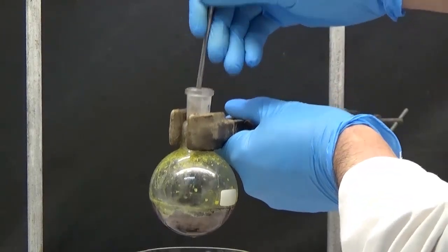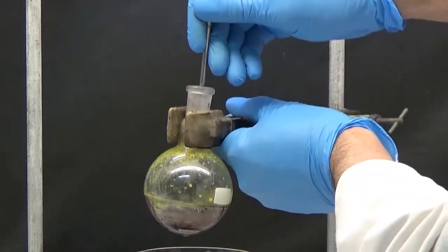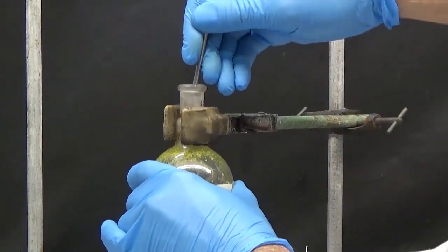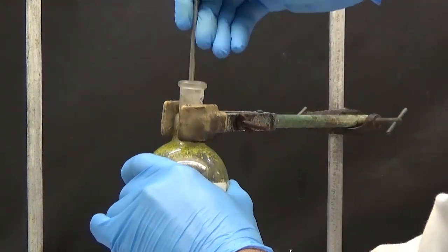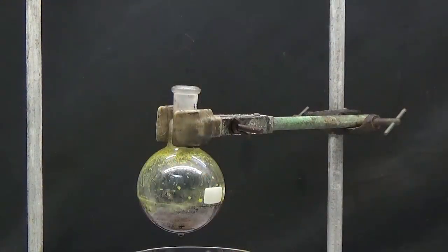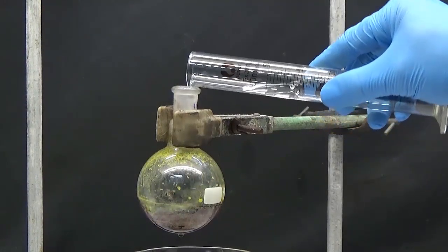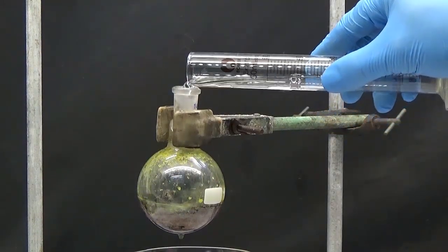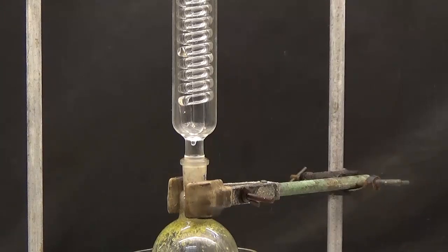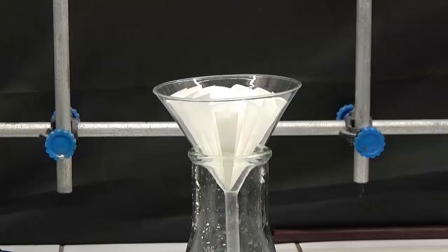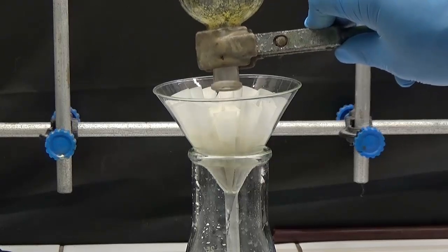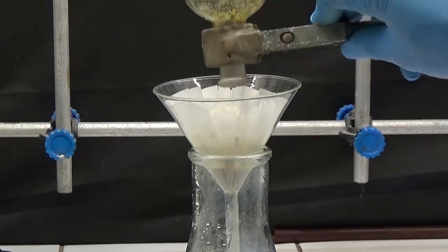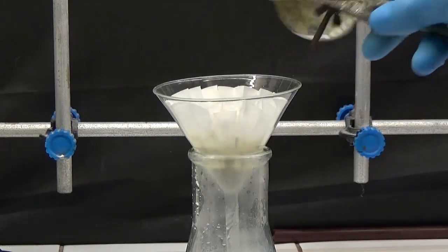We break it up with the spatula and add 40 milliliters of water. We heat at reflux for 30 minutes and filter the water through a filter paper. We save the filter paper for the next process and dispose of the filtered water.